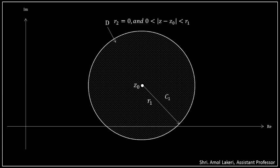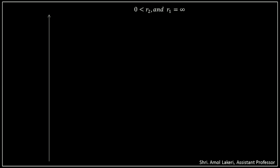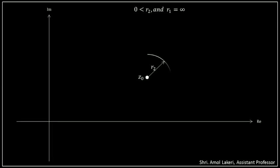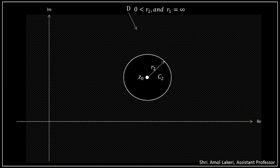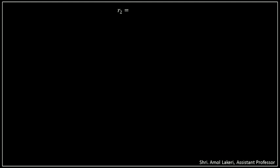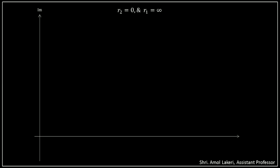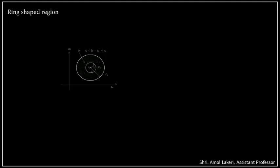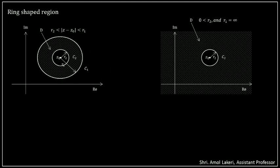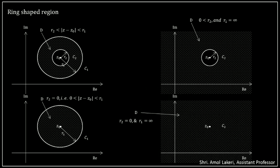Case 2: If R2 is finite and R1 tends to infinity, then the region is all the complex plane outside the circle of radius R2. Case 3: If we combine the previous two cases, that is if R2 is zero and R1 tends to infinity, then the region is all the complex plane except at point Z0. So we have seen a ring-shaped region and its different possibilities depending upon the values of R1 and R2, whether R1 is finite or infinite and R2 is zero or finite.